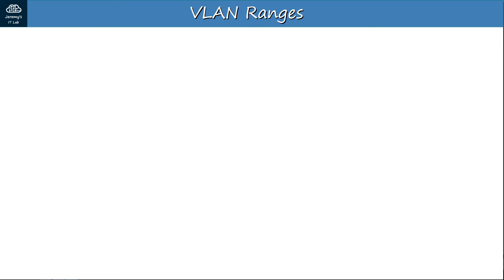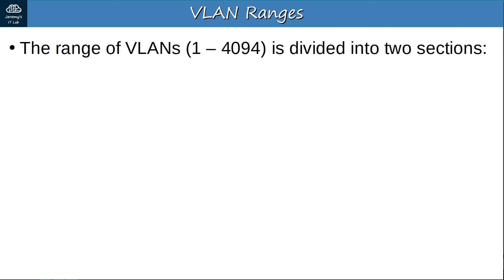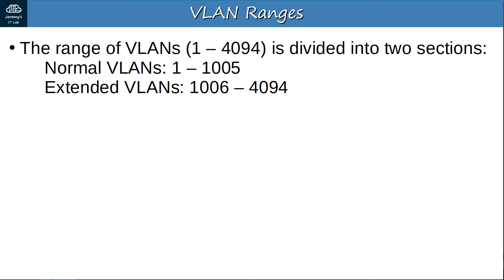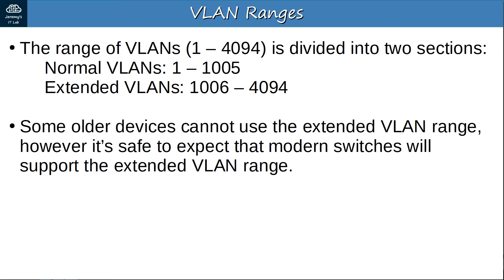The range of VLANs from 1 to 4094 is divided into two sections: normal VLANs, numbered 1 to 1005, and extended VLANs, numbered 1006 to 4094. Some older devices cannot use the extended VLAN range, but it's safe to expect modern switches will support it. Just be aware that some older switches might not support extended VLANs.